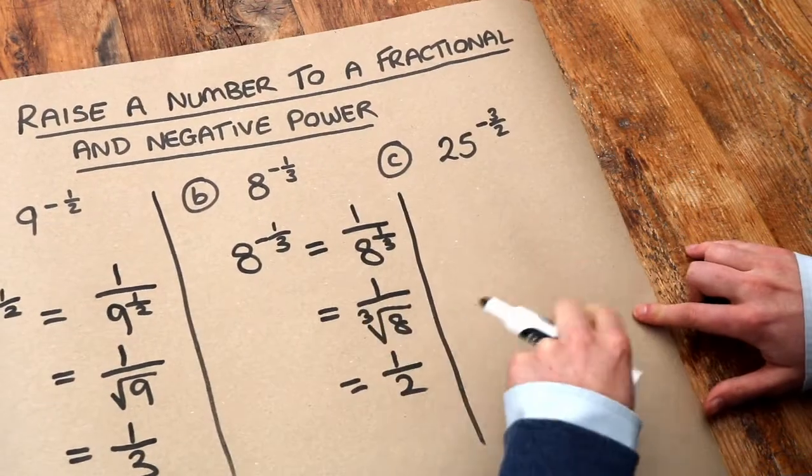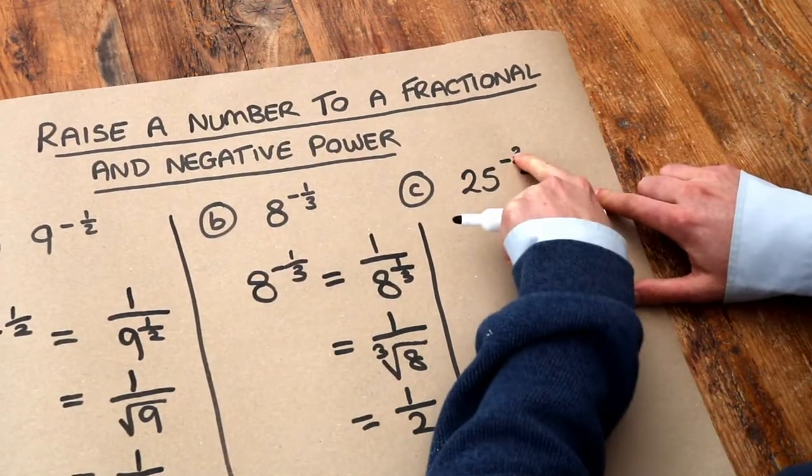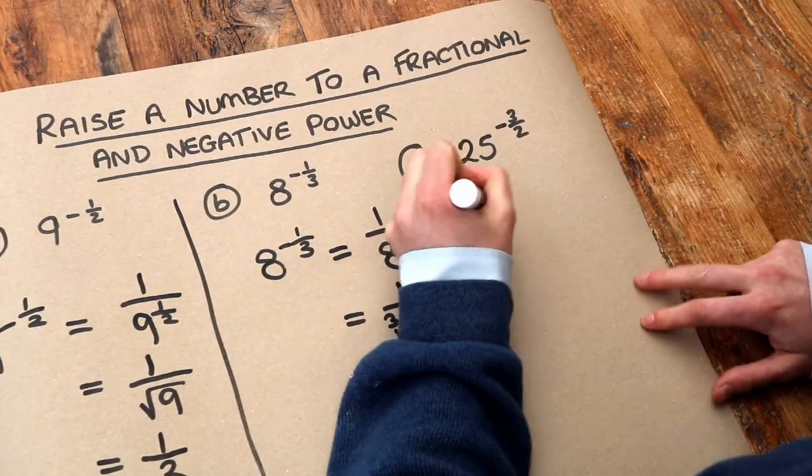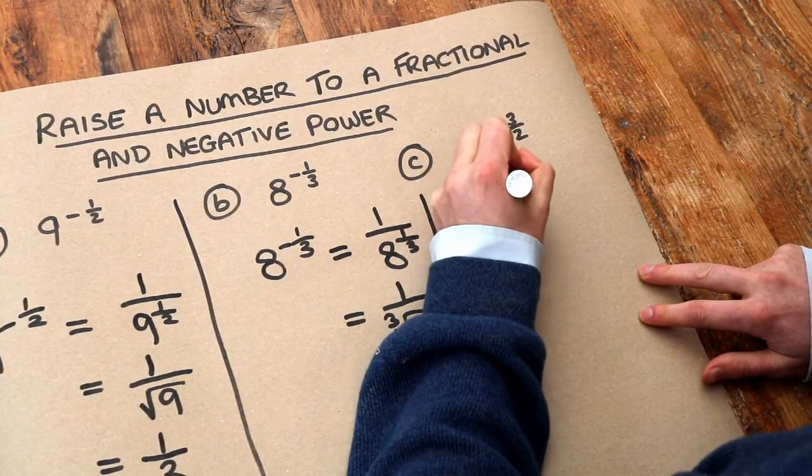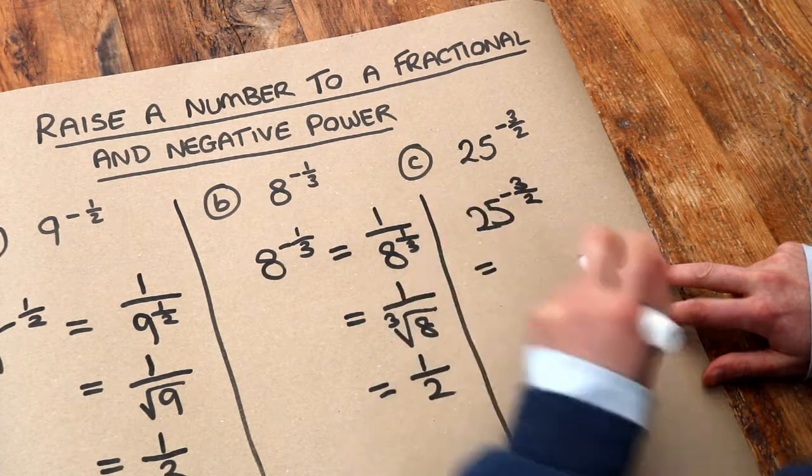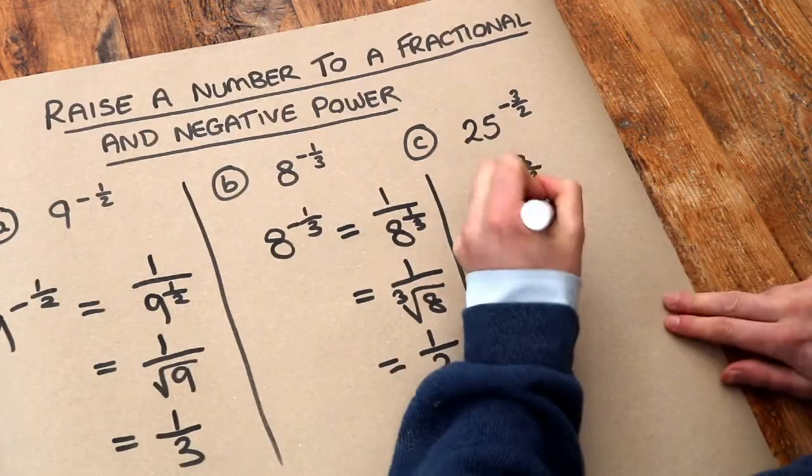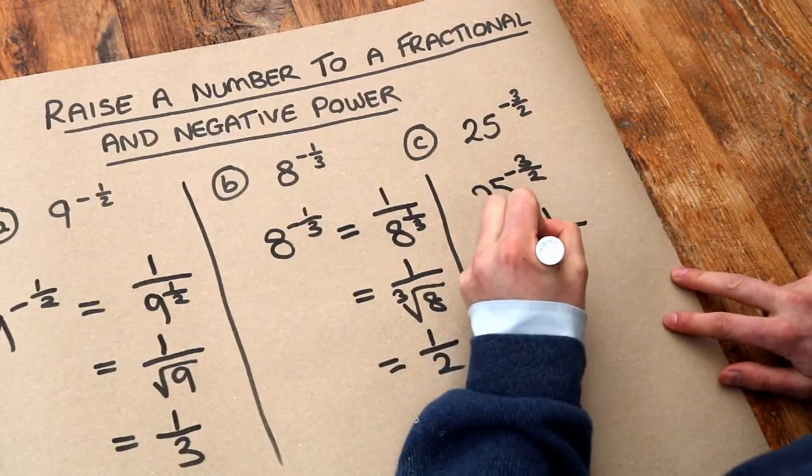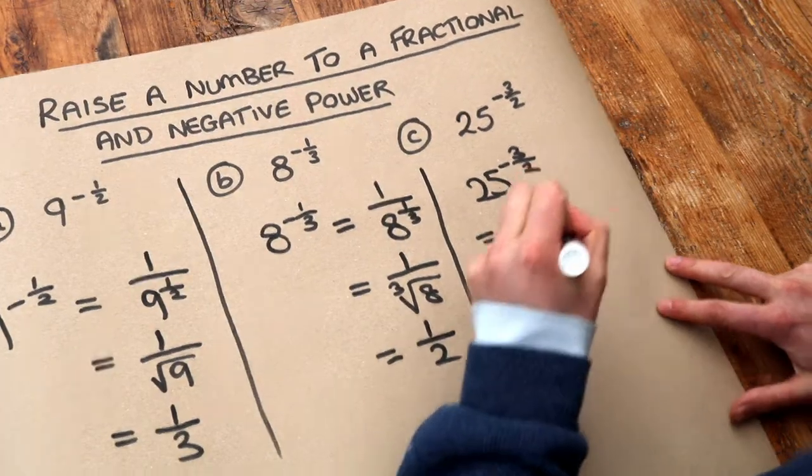And this last one is a bit harder because we've also got this 3 in the numerator of the fraction here. So let's do it bit by bit. We deal with the negative part of the power first. So 1 over 25 to the power of 3 over 2. The minus is now gone.